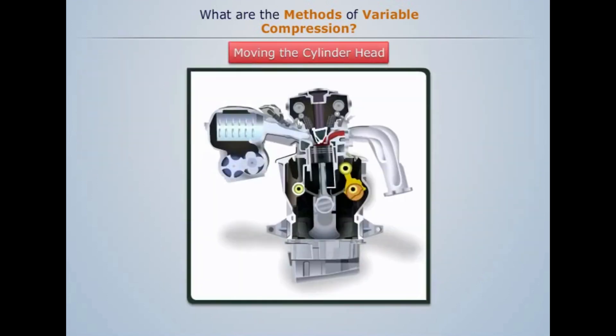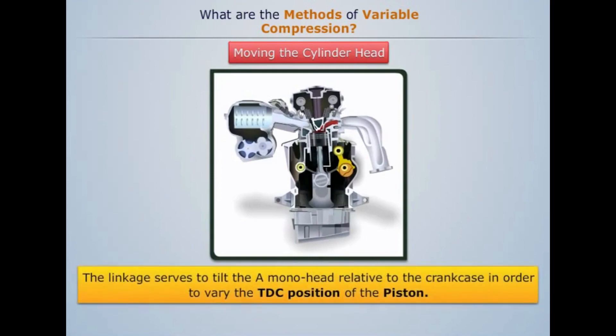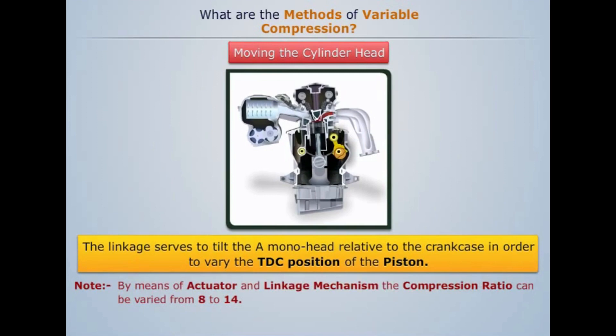Moving the cylinder head: The moving head concept combines the head and liners into a monoblock construction which pivots with respect to the remainder of the engine. That enables a tilting motion to adjust the effective height of the piston crown at TDC. The linkage serves to tilt the mono head relative to the crankcase in order to vary the TDC position of the piston. By means of an actuator and linkage mechanism, the compression ratio can be varied from 8 to 14.